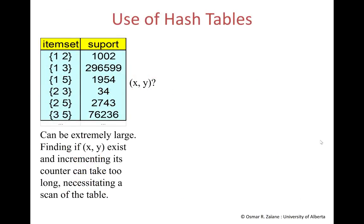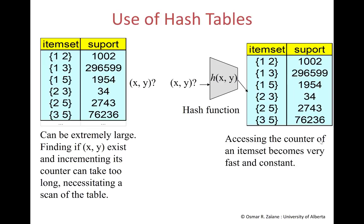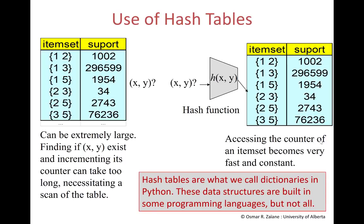However, there is still a problem when counting. Suppose you are counting the pairs, and you have the pair X and Y in the current transaction, and you want to increment the counter for X and Y. You have to traverse the very long list of counters to find it and adjust it. That can be very time-consuming, and you have to do it again and again for each transaction and many of the pairs. Instead, we can use what we call a hash function that gives us directly, given X and Y, where the counter for X and Y is in this very long list, and simply jump directly there to increment it — so we don't need to traverse the list. The list would be called a hash table, which is a very common data structure that is built in many languages. In Python, we call it a dictionary.